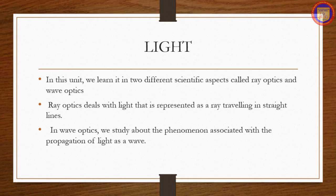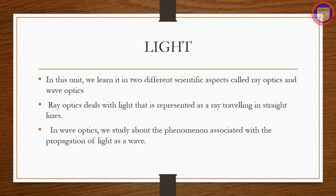In this unit we are going to learn about two different scientific aspects called ray optics and wave optics. Ray optics deals with light that is represented as a ray traveling in a straight line, and they are able to give various characteristics of light. In wave optics, we study the phenomena associated with the propagation of light as a wave.